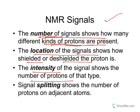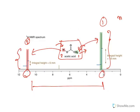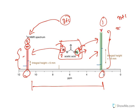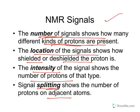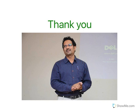Third, the intensity of a signal indicates the number of protons of that type — higher intensity corresponds to three protons (CH3), lower intensity to one proton (COOH). Fourth, splitting shows the number of protons on adjacent atoms using the n+1 rule. For the CH3 group with 3 adjacent protons, the signal splits into 3+1 = 4 peaks; for the single proton, it splits into 1+1 = 2 peaks. These details will be covered further in the next video.